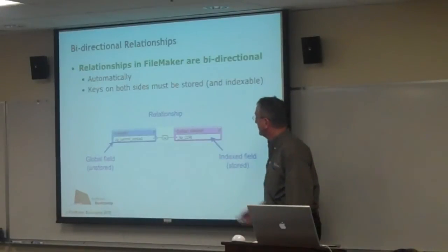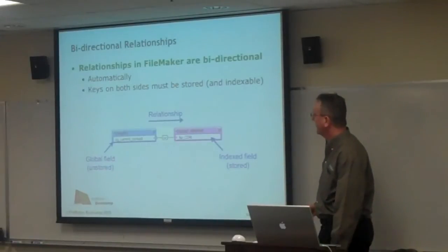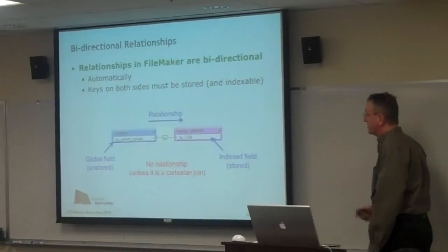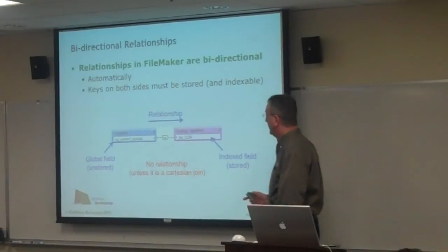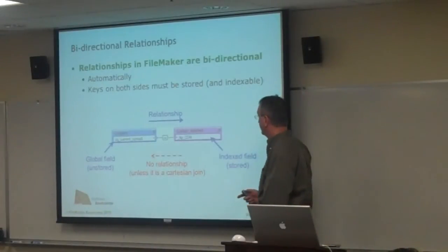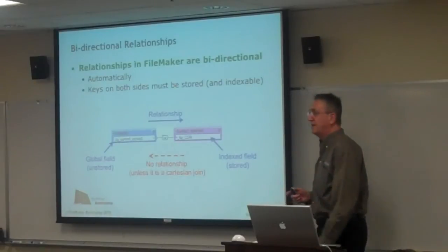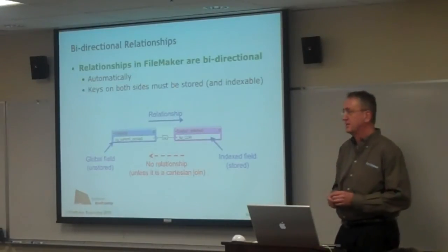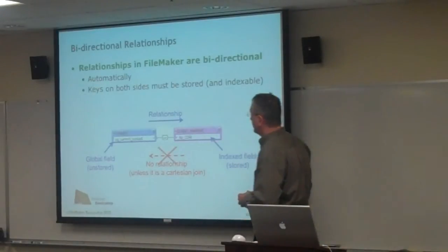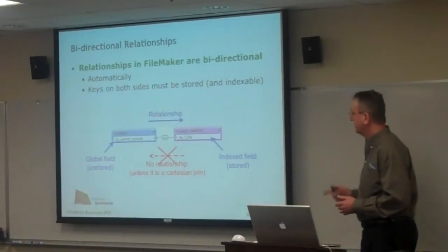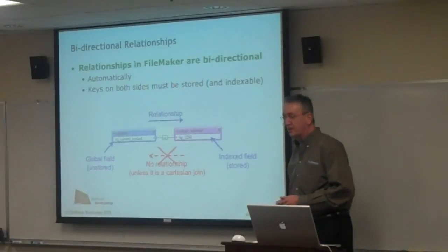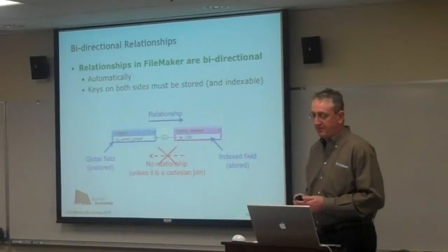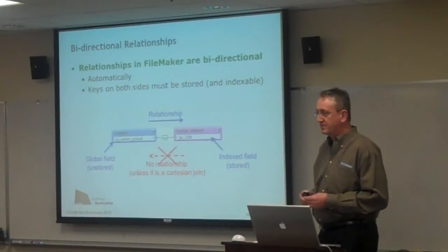This one is indexed, that one is not. There is a relationship that's valid going this way from the global field to the indexed field, but there's no relationship in the reverse direction — unless it's a Cartesian join, some people call it a cross-product join. So there's no relationship in the reverse direction. It's going to be invalid because you can't relate from an indexed field back to a global field.